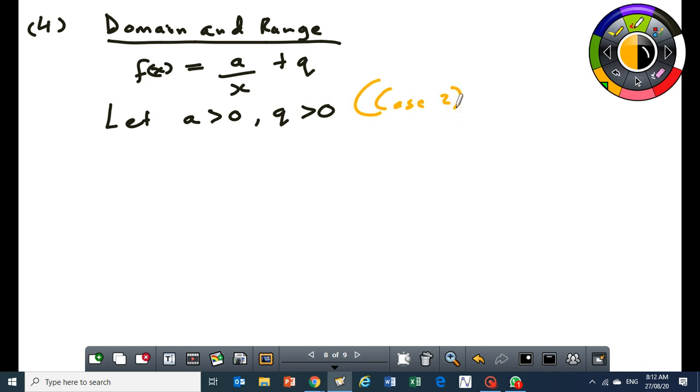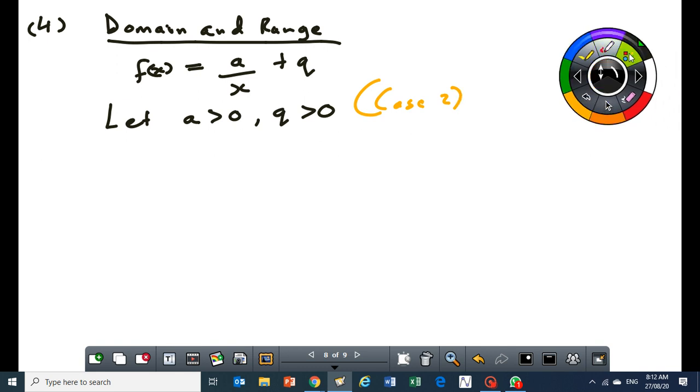I'm using case two to explain how to determine the domain and the range. Because this part here, it confuses learners, but it is taught from grade 8. Some learners will never get it how to write the domain and range until they finish matric. So I'm going to try and make it as simple to you as possible. So next, this is the case. Let's draw the graph. Let's see how it looks like. We know how it looks like.